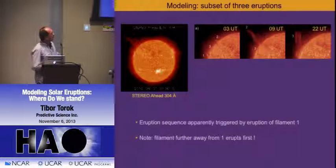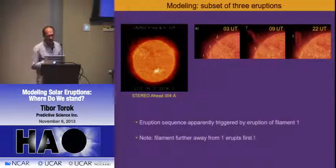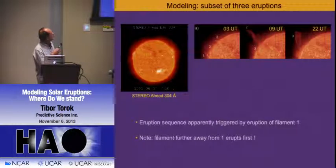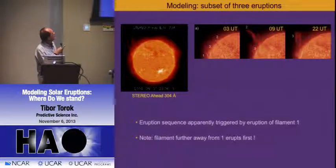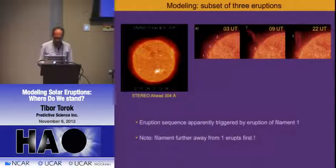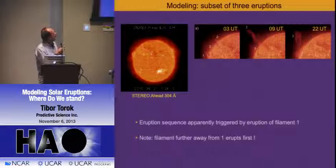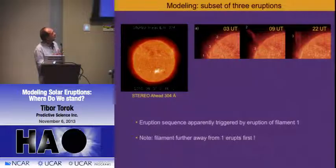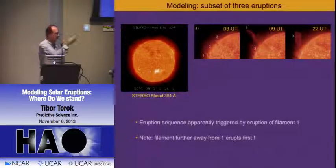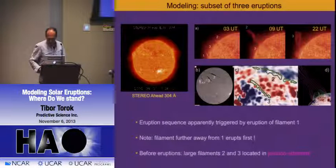We took a subset of only three eruptions. In this STEREO movie there are three prominences at the limb: a small one, and two larger ones. Here are some snapshots of these three eruptions. One interesting thing is that, assuming number one triggered the eruption of two and three, it's interesting that two erupts before three—which is further away—and let's keep that in mind.